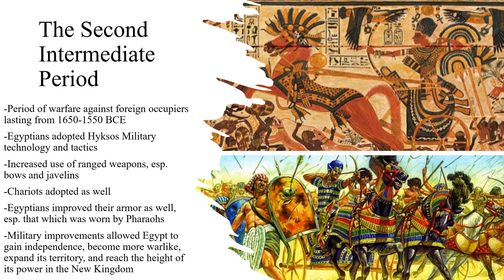During the Second Intermediate Period from 1650 to 1550 BCE, the ancient Egyptians worked to regain their independence and defeat the Hyksos. They accomplished this by adopting many of the military tactics of the Hyksos, including the use of chariots and the increased reliance on ranged weapons, especially bows and arrows and javelins. They also began wearing more armor, as shown by the pharaoh wearing his blue war crown and scale armor. These military improvements allowed Egypt to gain independence, become more militaristic, and expand its territory to reach the height of its power in the New Kingdom.